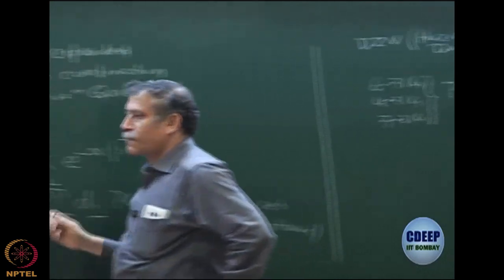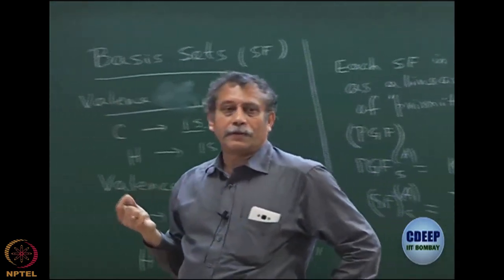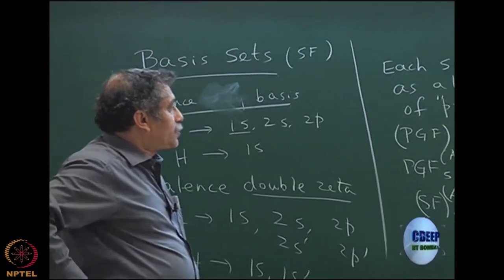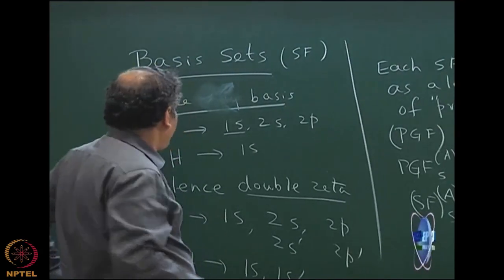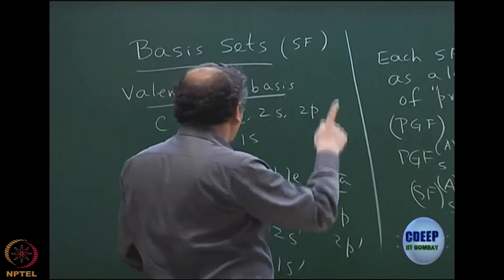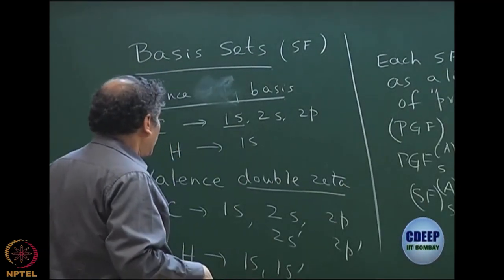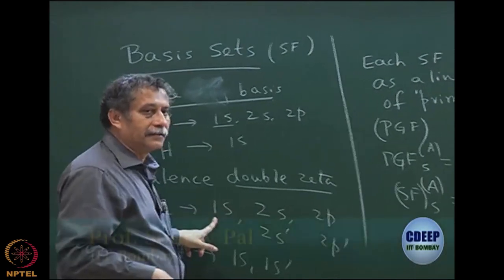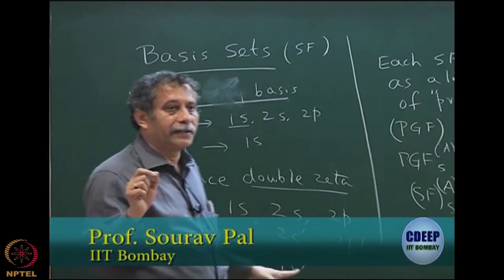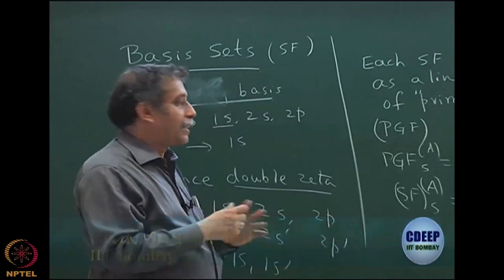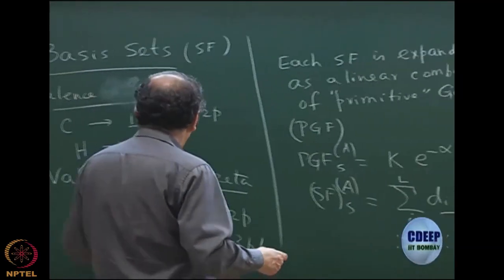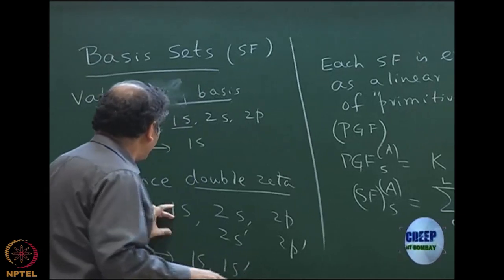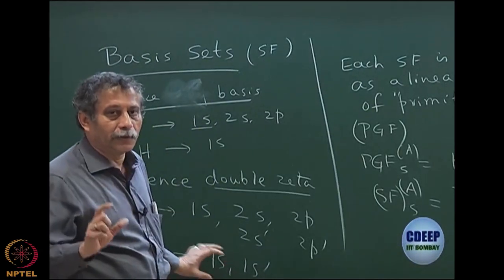I will explain these two examples — there may be many basis sets, but these illustrate what they mean. In the Huzinaga-Dunning basis, the core remains single zeta, meaning core is not expanded into two functions. Of course, the core is still expanded in terms of primitive Gaussians, but it is not doubled.